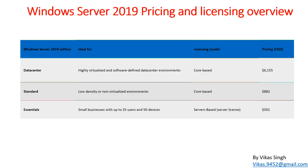Now let's discuss the pricing and licensing overview. Based on three editions, Windows Server 2019 comes in Datacenter, Standard, and Essentials. Datacenter is recommended for highly virtualized and software-defined datacenter environments — basically where you want to run multiple virtual machines on a physical machine. This licensing is core-based, meaning it's based on your physical CPU cores.